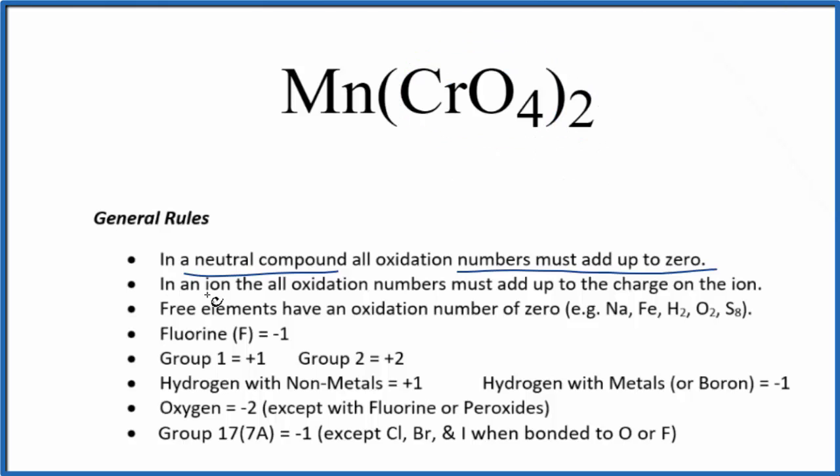So the chromate ion has a charge. The whole thing, its ionic charge, is two minus. What this means is, if we know the charge on the ion, all the oxidation numbers are going to add up to the charge on the ion. So the oxidation numbers on the chromium and the oxygen, all of these will add up to two minus.